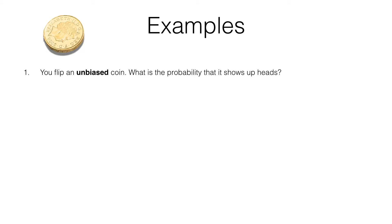In the first example, you flip an unbiased coin and you're being asked to work out the probability that it shows up heads. With theoretical probabilities it's really important that we are dealing with situations where all of the outcomes are equally likely.